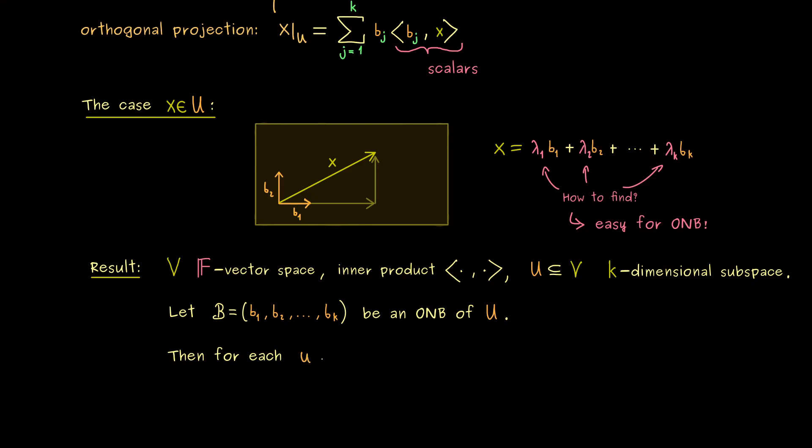Therefore here our orthonormal basis of U has k elements. And then we can say that for each vector u in U we have a linear combination with the basis. And the coefficients here are exactly given by the inner product bj with u. Hence in the case of an ONB we don't have to solve a whole system of linear equations. We can just calculate inner products.